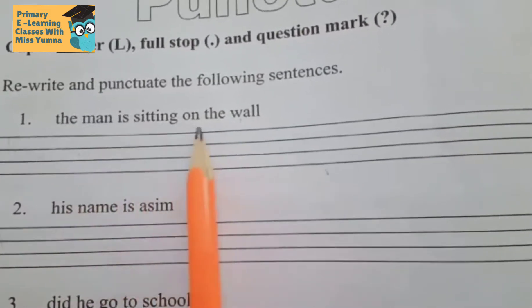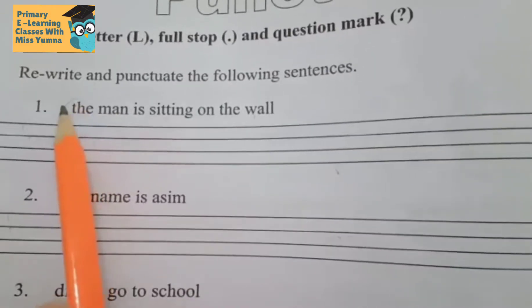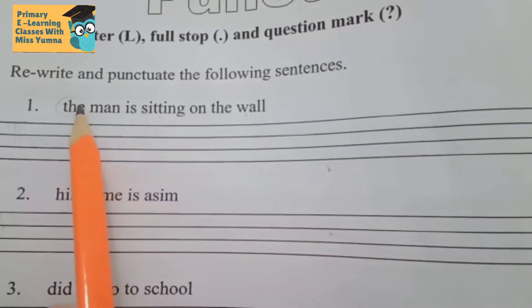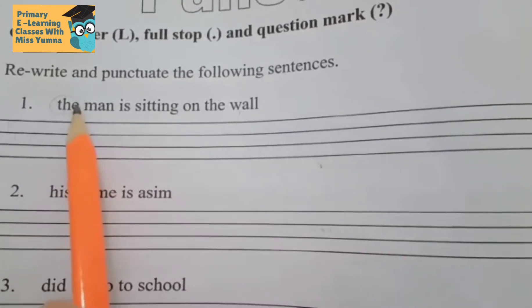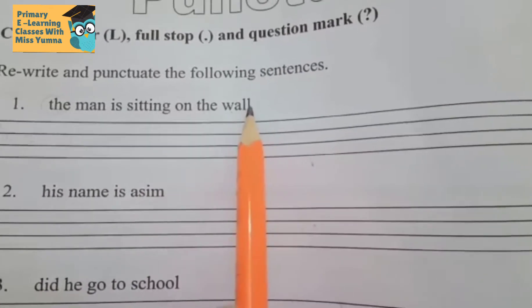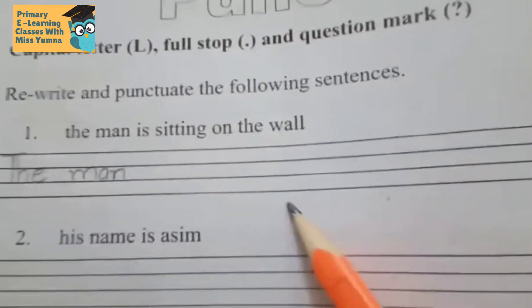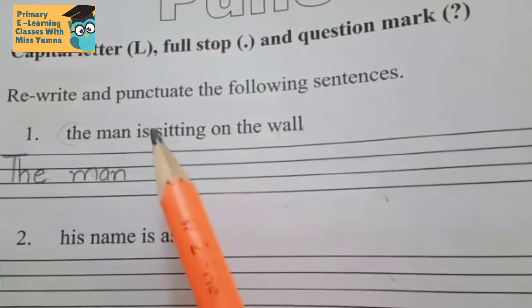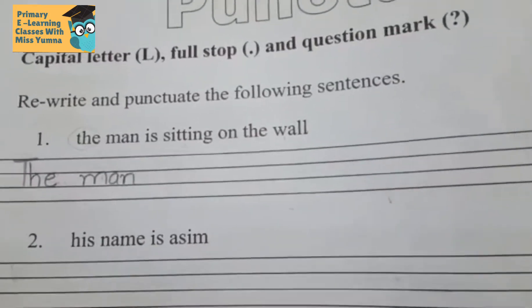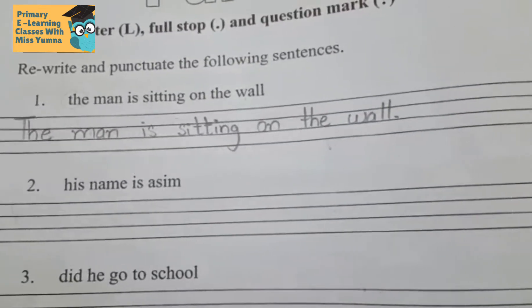Number one: 'The man is sitting on the wall.' Here, the first word 'the' starts with a capital letter and the sentence ends with a full stop, because it says clearly what the man is doing — he is sitting on the wall.